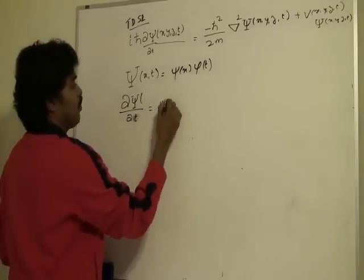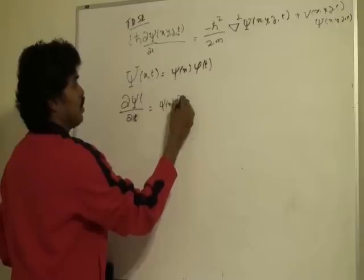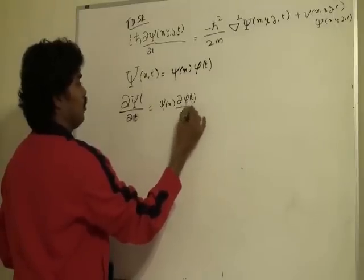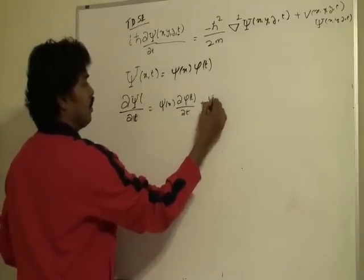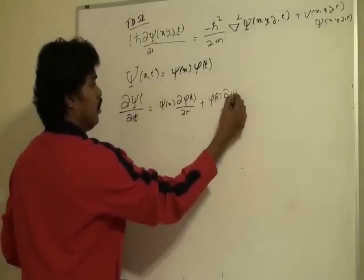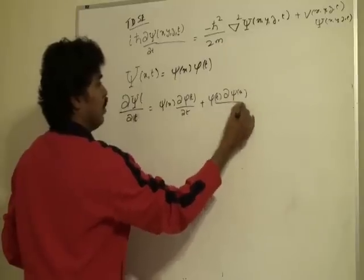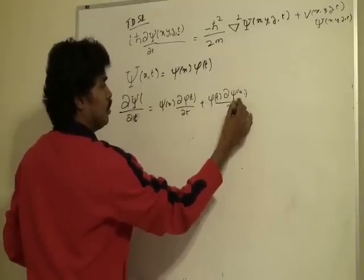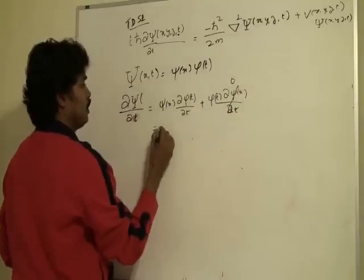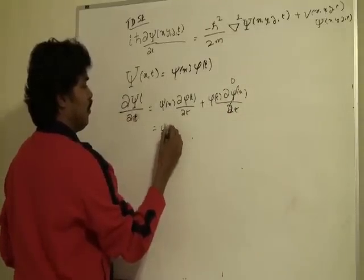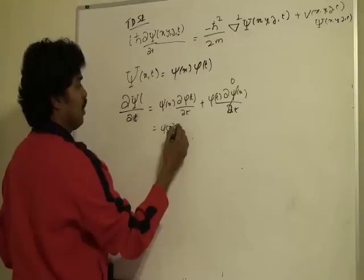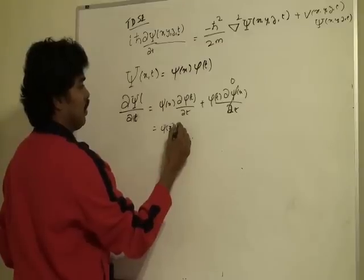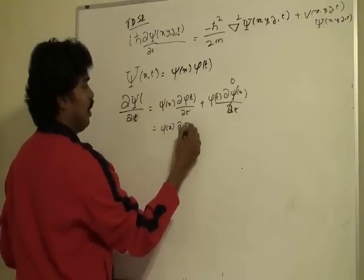ψ of x, then differential of this ∂φ/∂t plus ∂ψ of x by ∂t. So this becomes zero and this is ψ of x into ∂φ of t by dt.